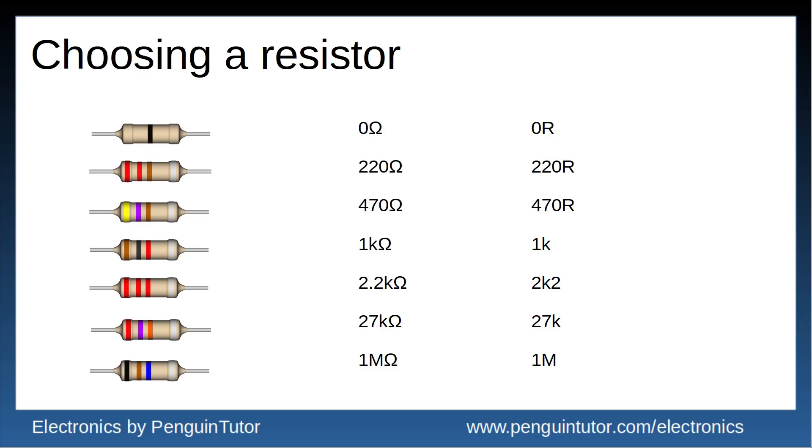So as you can see you've got 0R for zero ohms, 470R for 470 ohms, and then when we get into the kilo ohms it becomes 1K. If there's a decimal point in it then that's where the letter goes, so 2K2, and then we have 27 kilo ohms and 1 mega ohm shown as such.